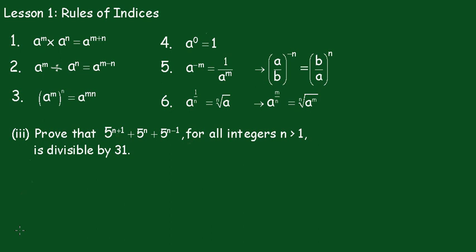In part 3, we have to prove that 5 to the n plus 1 plus 5 to the n plus 5 to the n minus 1 for all integers n greater than or equal to 1, is divisible by 31. Now, remember the previous one. We took out 2 to the n minus 1 as a common factor. We could do that. Or, there's another way we could do this.